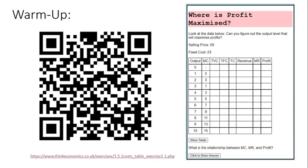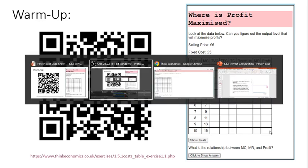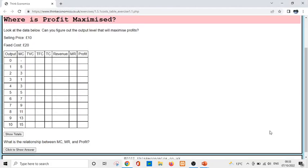Let's talk about what perfect competition is. There's a quick warm-up you can do on Think Economics, under exercises 1.5.1 cost table, which you may have already done, but it's a good reminder. If our selling price is 10 pounds and our fixed cost is 20 pounds, the question is: where is profit maximized?